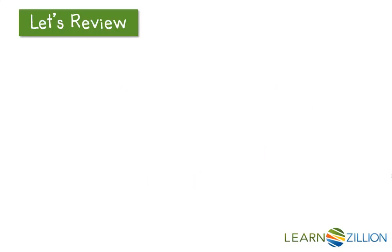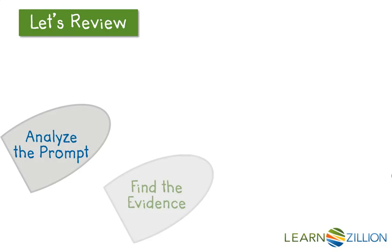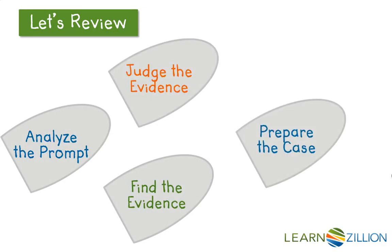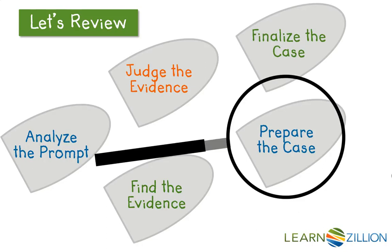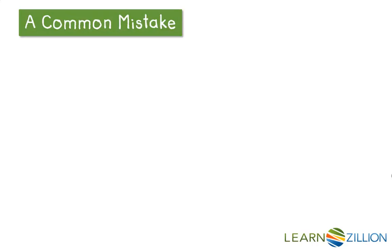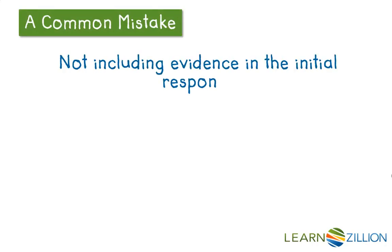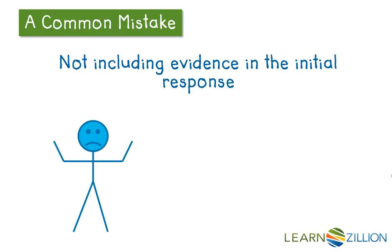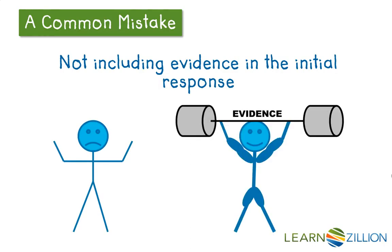Now we're thinking like detectives to answer this prompt, and here are our steps: analyze the prompt, find the evidence, judge the evidence, prepare the case, and finalize the case. We're right here at prepare the case — just writing the first sentence. A common mistake is not including evidence in the initial response. Here's your scrawny little response without the evidence, and here he is all beefed up with evidence. We want to add a little evidence to our first sentence that answers our prompt.